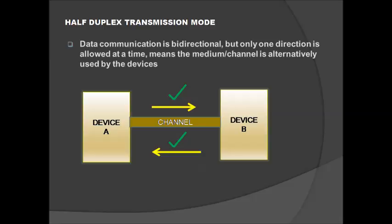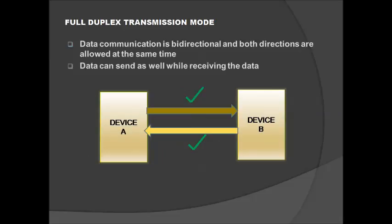In full duplex transmission mode, data transmission is also bi-directional, but both directions are allowed at the same time. Device A can send data to device B while simultaneously receiving data, and device B can also send and receive data at the same time. The throughput in full duplex is greater compared to other transmission modes. These are the transmission modes available in serial communication. Thank you for watching this video.